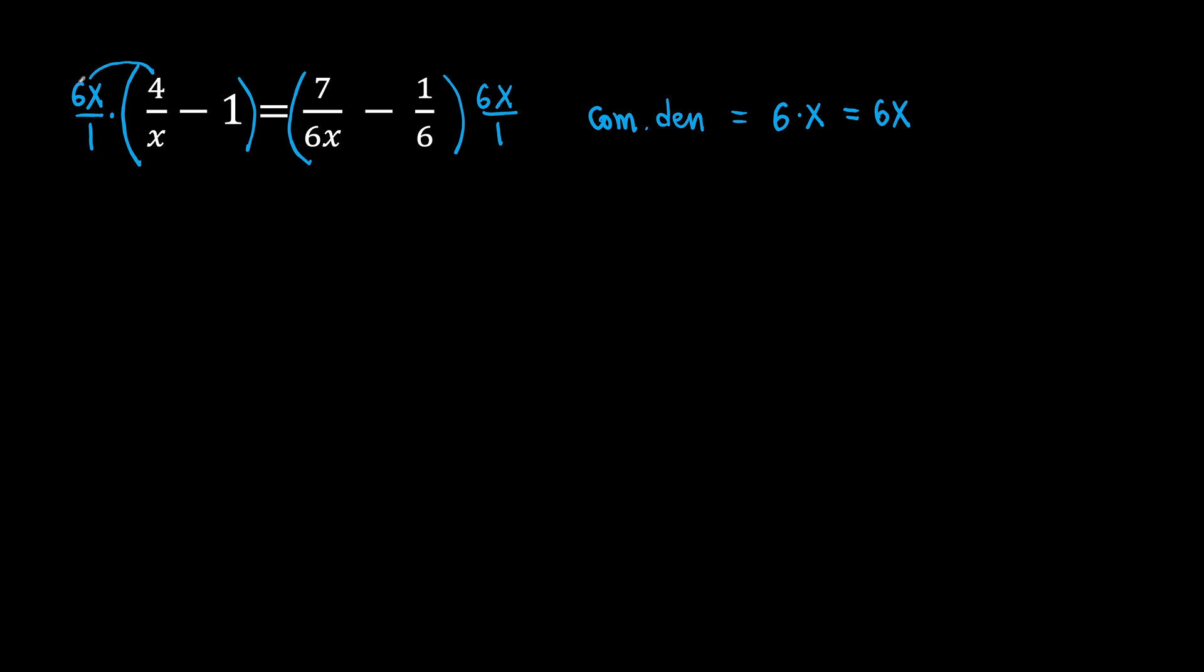We are going to use the distributive property and multiply each term of the equation by 6x. So 6x over 1 times 4 over x. Next, we have minus. Be careful, do not lose this minus. We have 6x over 1 times 1. On the right side, we take 6x over 1 and multiply by each term. So 6x over 1 times 7 over 6x minus 6x over 1 times 1 over 6.